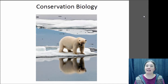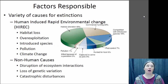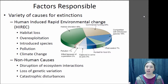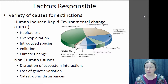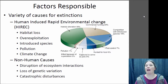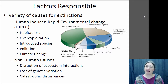Right now we are in the sixth mass extinction. Many species are becoming extinct and the main reasons for these extinctions are humans. The things that are causing these species to go extinct are changes that humans are causing in the environment, so we call these human-induced rapid environmental change, or HIREC. That incorporates a number of different factors: